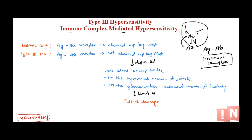In normal conditions, when the antigen is bound by antibody, this immune complex gets cleared up because it needs to be removed from the system. Generally, this immune complex is cleared by our reticuloendothelial system — for example, phagocytic cells like macrophages can phagocytose this immune complex and remove it from circulation.